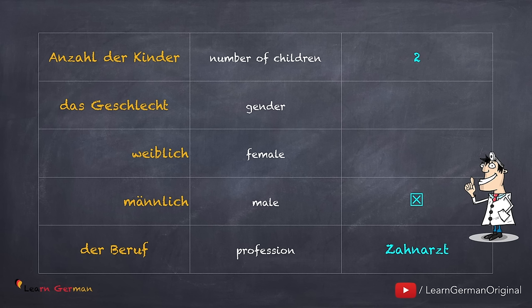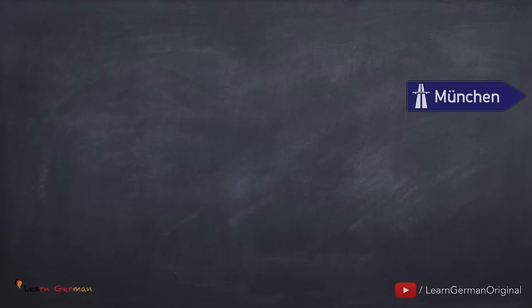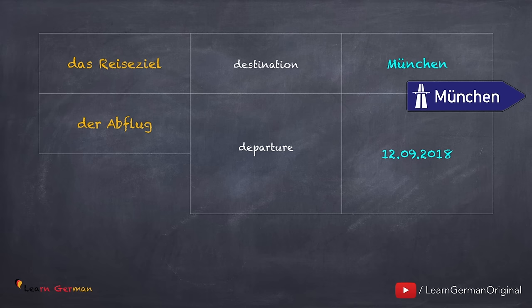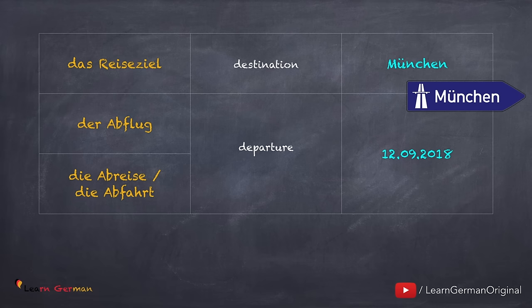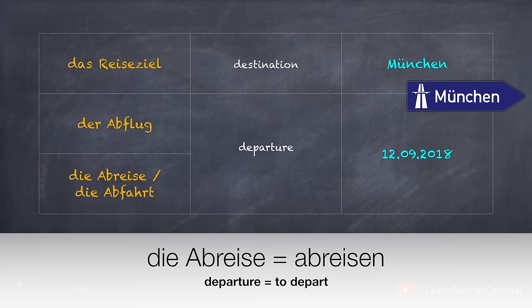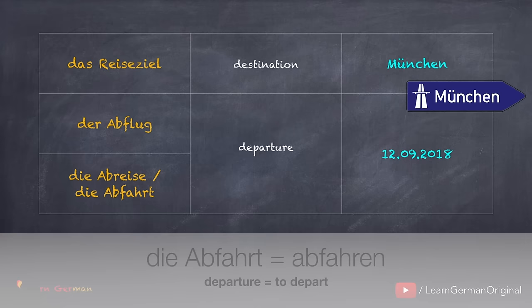Some forms are specific, and you should know why you're filling them. There could be a form at the doctor's or at the travel agent's. You should mention things like das Reiseziel — the travel destination — any city or country. If you're booking tickets or a hotel, mention important dates: der Abflug, die Abreise, or die Abfahrt — all three mean departure. They can also appear as verbs: abfliegen, abreisen, abfahren.